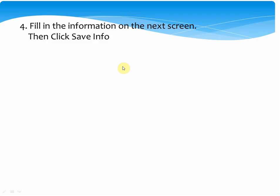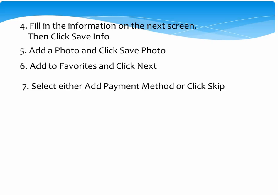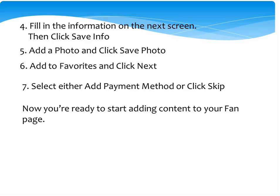The next thing will be you'll fill in the information on the next screen, and then you're going to click Save Information. After that, you'll add a photo again and click Save Photo — it's the same way you did for the beginning part of the demonstration. Then you're going to add it to your favorites and click Next. At that point, you can either select Add Payment Method, where Facebook will assist you in doing some type of advertising, or you can click Skip if you'd rather do it on your own. Now you're ready to start adding content to your Facebook.